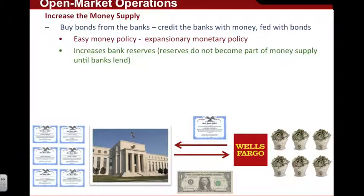What actually happens when the Federal Reserve engages in open market operations is that banks have greater reserves on hand. Reserves are essentially money that the bank has on hand that they can either loan or hold. When the Federal Reserve engages in open market operations, they increase the bank's reserves. But it's important to note that these reserves do not become part of the money supply until the banks start lending the money.